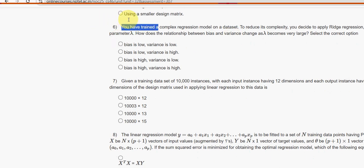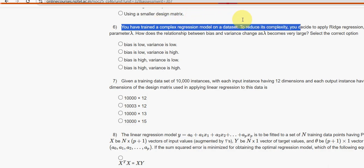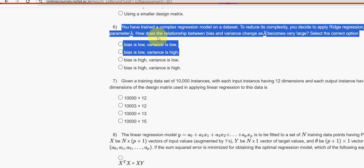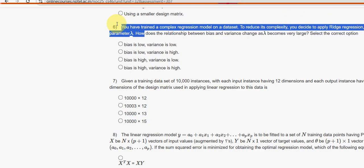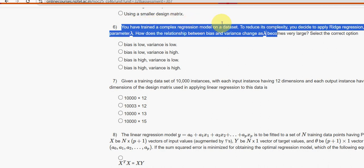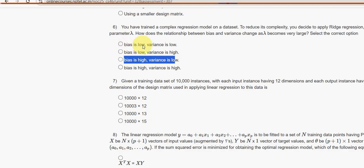You have trained a complex regression model on a dataset. To reduce its complexity, you decide to apply ridge regression using a regularization parameter. How does the relationship between bias and variance change as lambda becomes very large? Select the correct option. For the sixth question, the probable solution is third option: bias is high, variance is low.